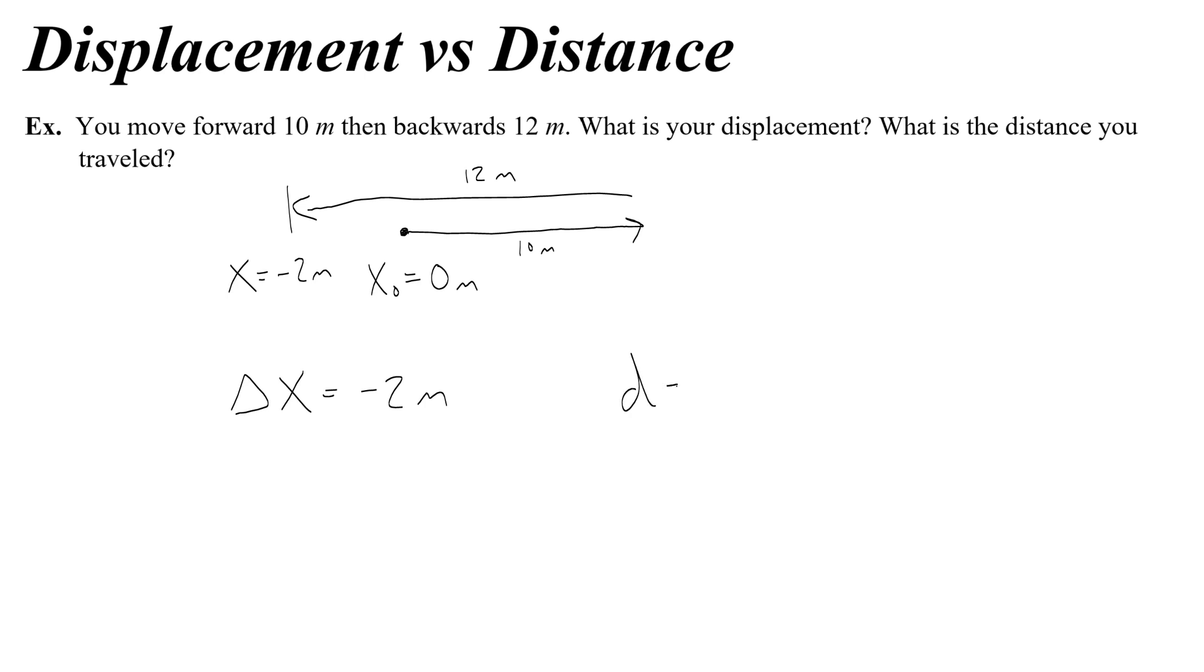But the distance that you traveled, which we can use d to represent, is not interested in the fact that you've turned around. It is just taking into account the total raw quantity of length that you've gone through. So that would be 10 plus 12 meters, or 22 meters. So the change of my position is 2 to the left of where I started, but the overall distance that I've traveled is 22 meters.